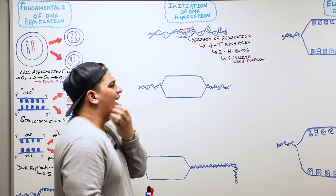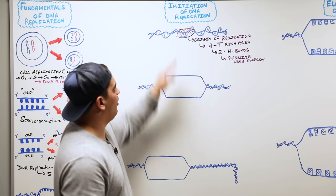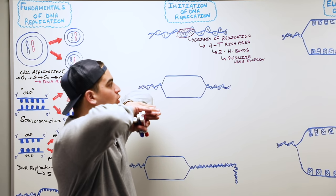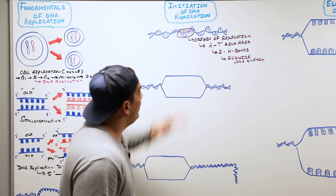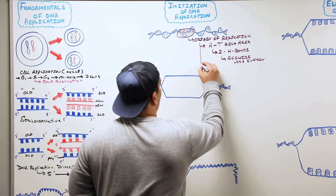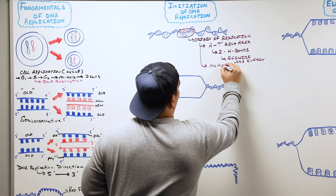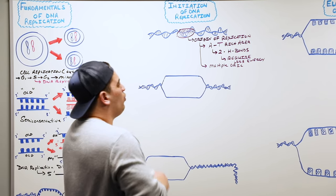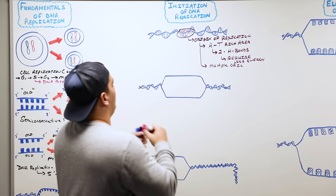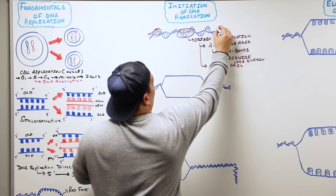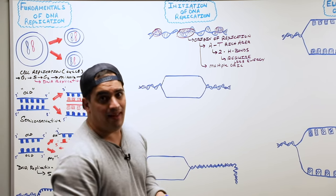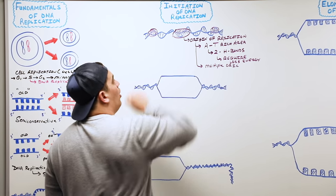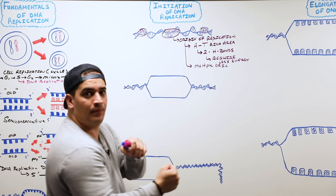In eukaryotic cells, is there only one origin of replication? No. What's really important is that in eukaryotic cells, there are multiple origins of replication — sometimes represented as OriC. So for example, while we may show one origin, there may be another origin of replication here and another one here, each rich in adenine and thymine nucleotides. What type of structure binds to these areas and helps break the bonds between adenine and thymine?